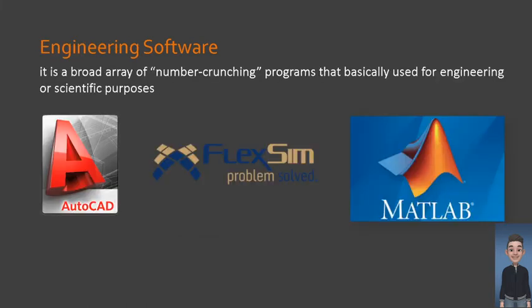Third type, we have engineering or scientific software. It is a broad array of number crunching programs used for engineering or scientific purposes. It caters the range from astronomy to volcanology, from automotive stress analysis to orbital dynamics, and from computer-aided design to molecular biology. In short, it is mathematical in nature, used to forecast, predict, or simulate scenarios using data. Good examples are Matlab and GeoGebra.